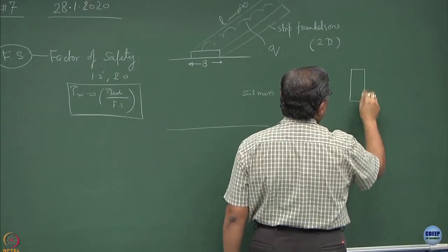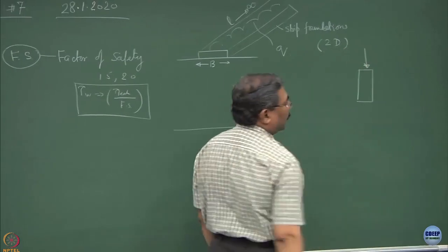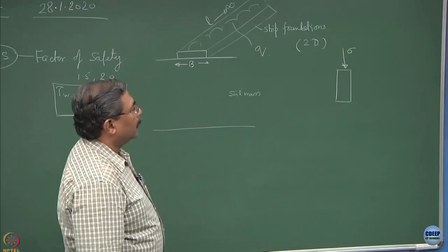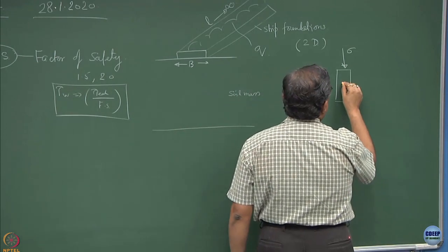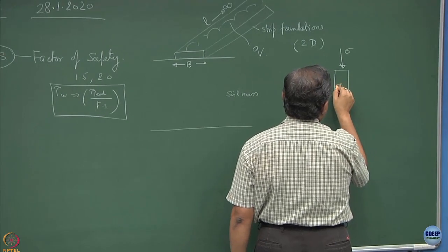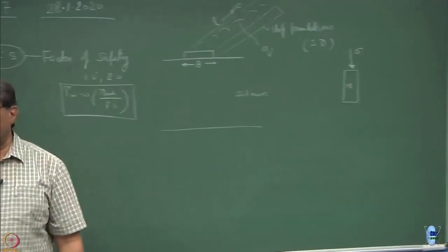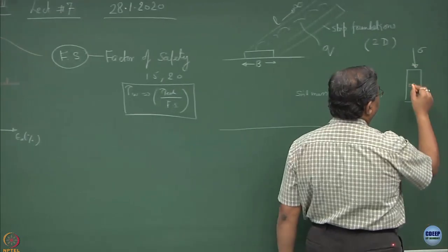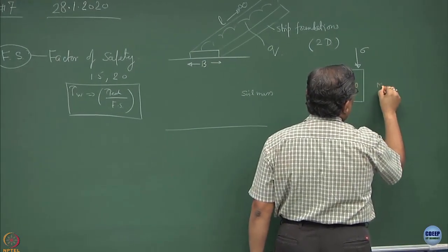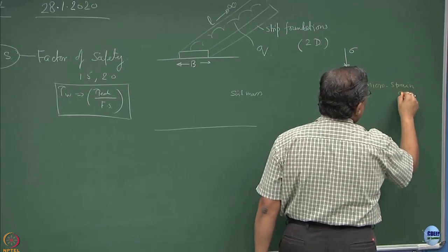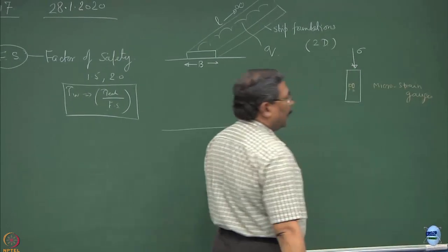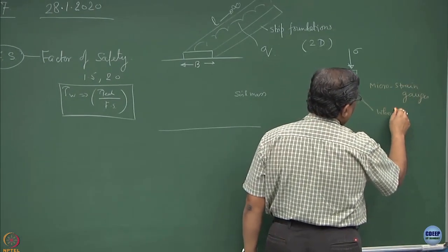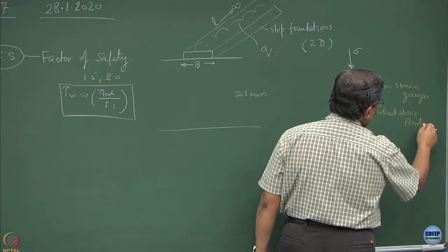This is a typical triaxial sample. If I load it by applying some confining stress, what I have to do is put what we call micro strain gauges. Two micro strain gauges have been installed, strain gauge number 1 and 2, and ultimately these strain gauges are connected to a Wheatstone bridge.